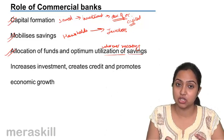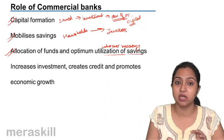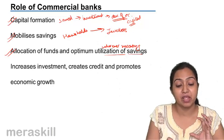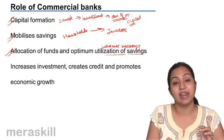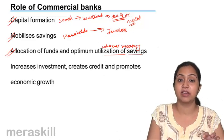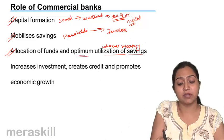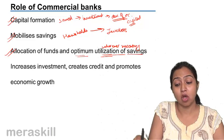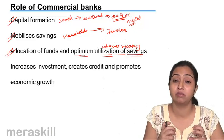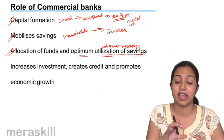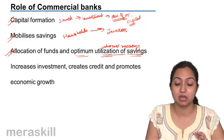But after nationalization, when the RBI and the government have control over it, allocation of funds has been done in a proper way. Wherever it is necessary, funds are provided and that sector has grown. This has led to optimum utilization of savings, because ultimately when we save our money, we need it to go in the right place. So banks do the allocation of funds in a proper way.